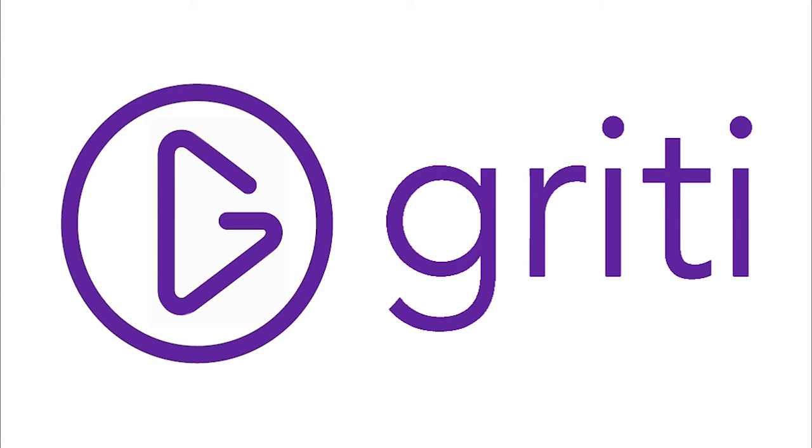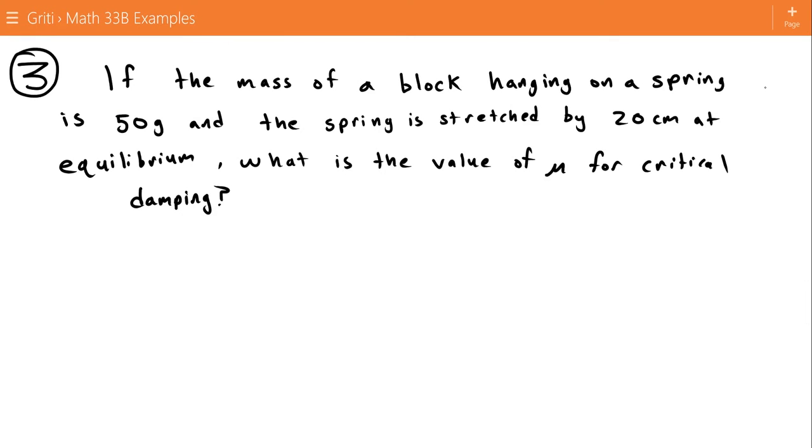For our third question, if the mass of a block hanging on a spring is 50 grams and the spring is stretched by 20 centimeters at equilibrium, what is the value of mu for critical damping?